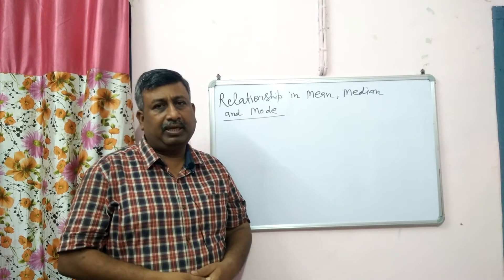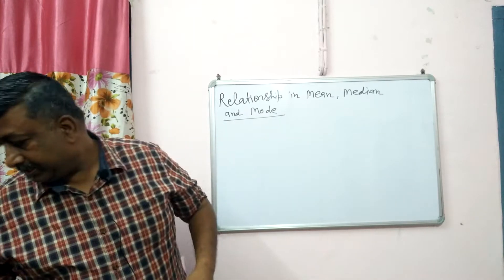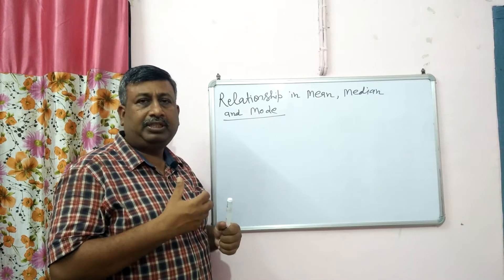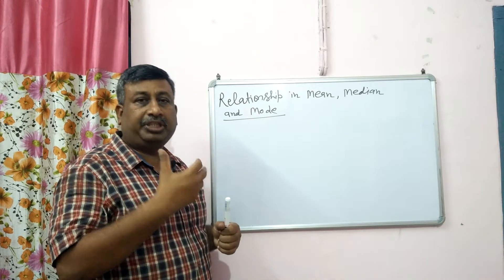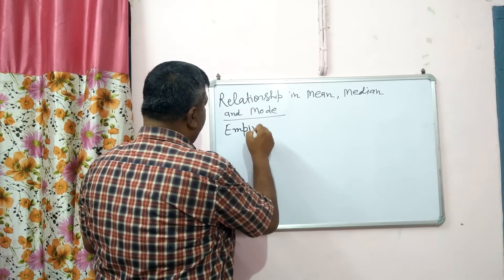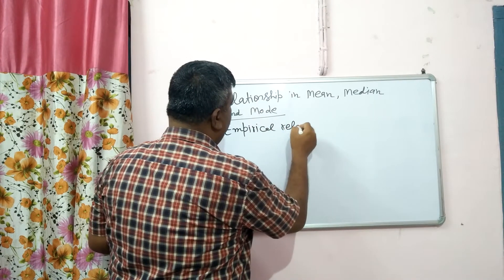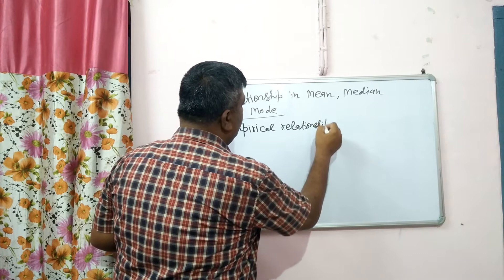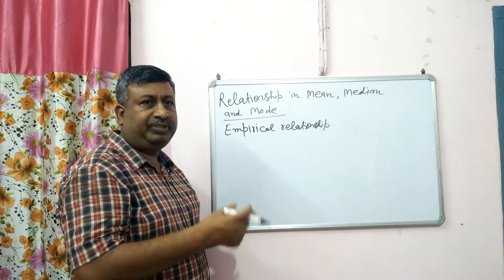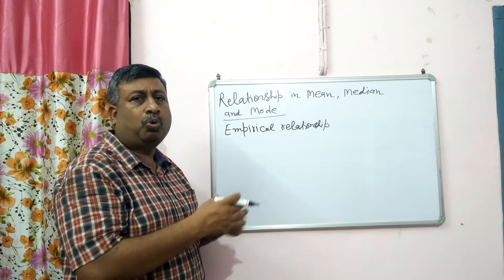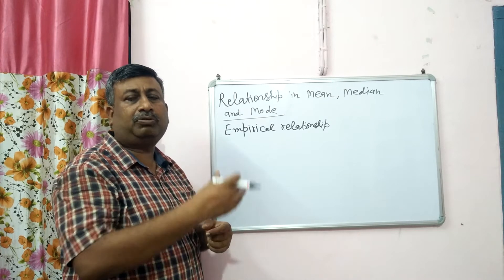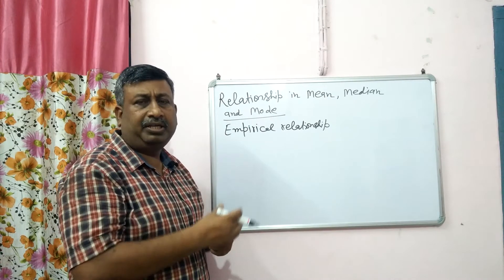What is the relationship? This relationship is not a mathematical relationship — not based on theory. Actually, this relationship is an empirical relationship. The empirical relationship is based on our observation, based on experiments. We perform experiments and we can make some relationship or correlation, and this relationship is not based on theory.